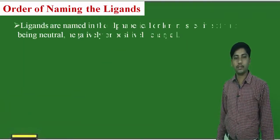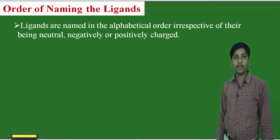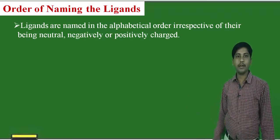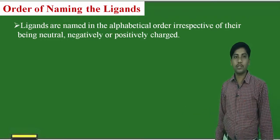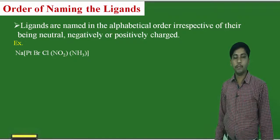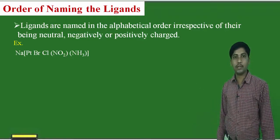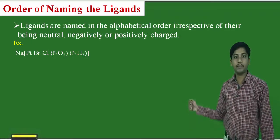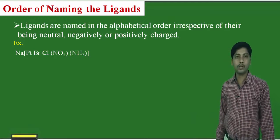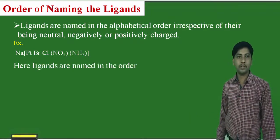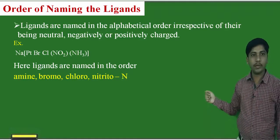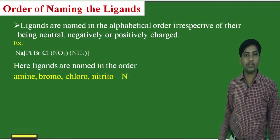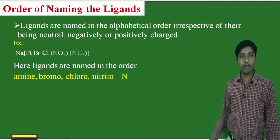Order of naming the ligands: ligands are named in alphabetical order, irrespective of whether they are positive, negative, or neutral. In the example Na[Pt(Br)(Cl)(NO2)(NH3)], there are four different ligands attached to platinum. The alphabetical order is: amine (A), bromo (B), chloro (C), and then nitrito-N (N).